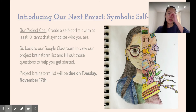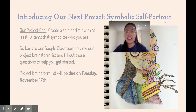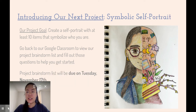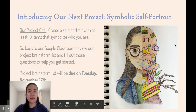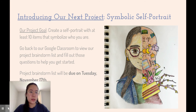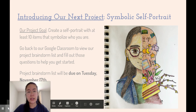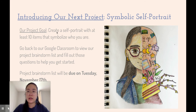Let's introduce our next project, which is called Symbolic Self-Portrait. On the right is an example — you're going to create something similar; it does not need to be exact. I'll go over more details when we actually see each other on Wednesday. Our main project goal is to create a self-portrait with at least 10 items that symbolize who you are.